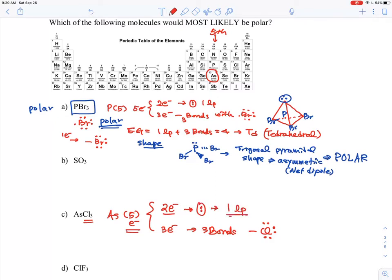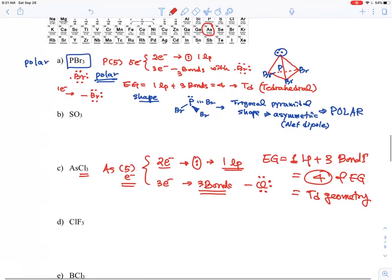For the electron group geometry, you have one lone pair and three bonds, which means a total of four. With four electron groups, this is known as tetrahedral geometry.